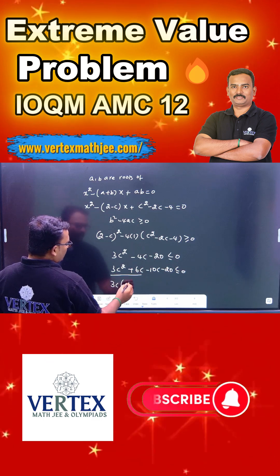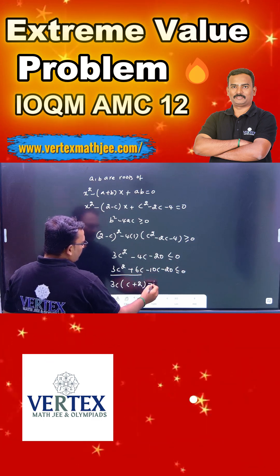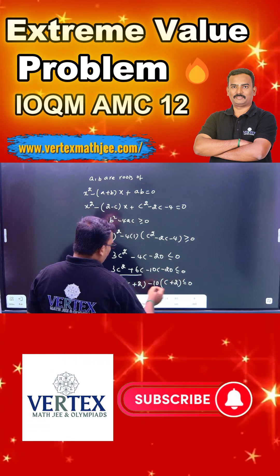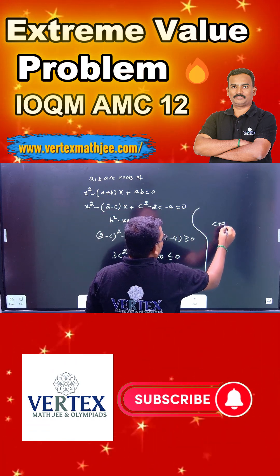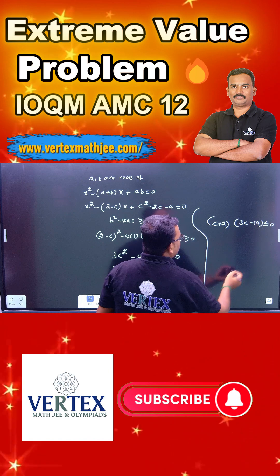First two terms, 3c you take common, c plus 2. Next two terms, you can see minus 10 if you take common, c plus 2. The whole thing which is common, c plus 2 into 3c minus 10 is less than or equal to 0.